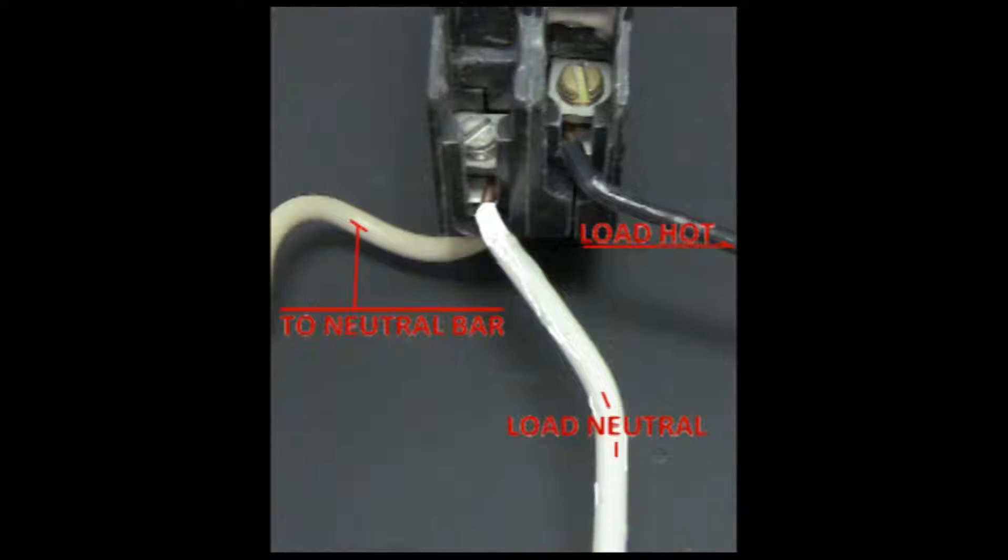The neutral for that circuit terminates on the breaker lug labeled load neutral, and the curly white wire terminates on the neutral bar. Therefore, the load neutral passes through the arc fault breaker, guaranteeing your safety.